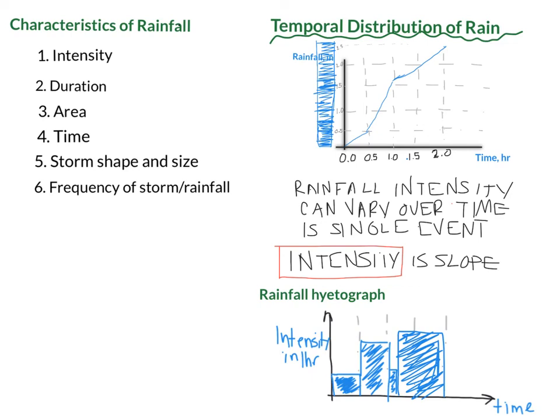So moving forward your next assignment is going to be to record an audio recording of yourself defining rainfall for me and describing at least one of the processes in the videos that you watched. And then next we're going to move into talking about how rainfall is measured which is very important so that water resource engineers and hydrologists know how much rain has actually fallen and can plan. Thank you.